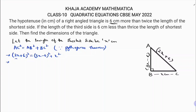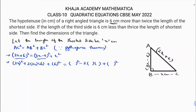The left side is in the form of (A + B)², which expands to A² + 2AB + B², where A = 2x and B = 6. The right side (3x − 6)² is in the form (A − B)², which expands to A² − 2AB + B², where A = 3x and B = 6.